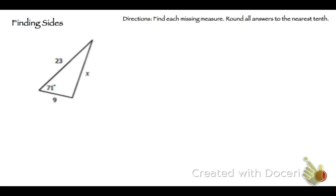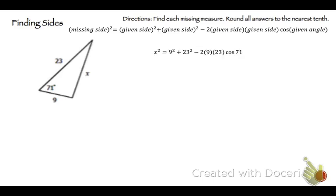So now let's just get into finding sides. So remember this is missing side equals given, given, and then all that other stuff. So my missing side here is x, my given sides are 23 and 9, and my given angle is 71. So I'm just going to plug that in. So that's going to be X squared equals a given side so that's 9 squared plus 23 squared minus 2 times 9 times 23 times the cosine of 71. And then put the whole entire thing into your calculator so put that whole right side into your calculator. So that's 9 squared plus 23 squared...